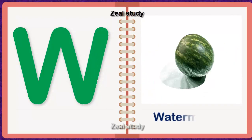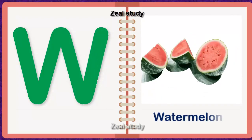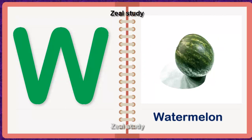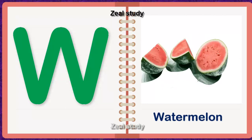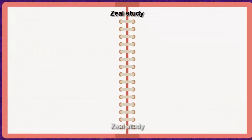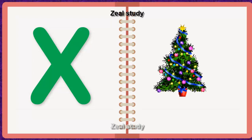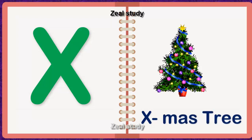W for Watermelon. W, A, T, E, R, M, E, L, O, N. Watermelon. X for. Text mystery. X.